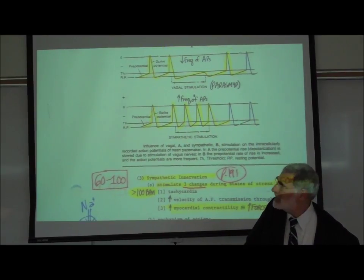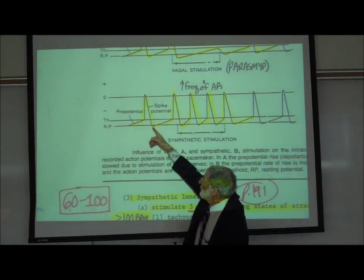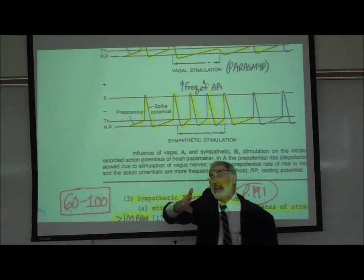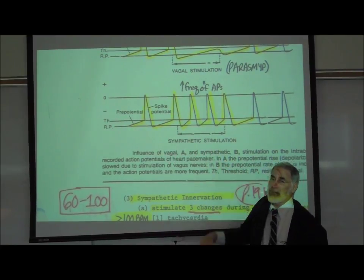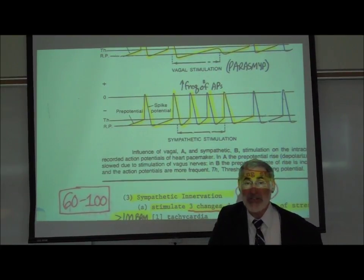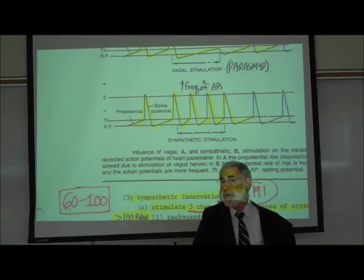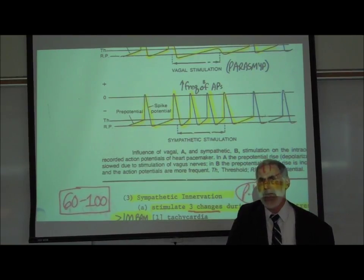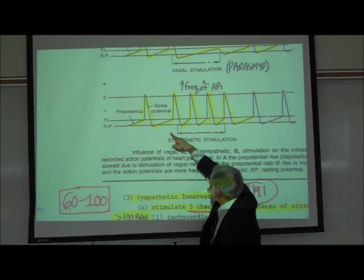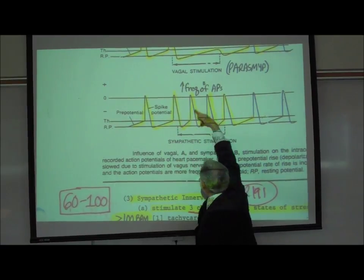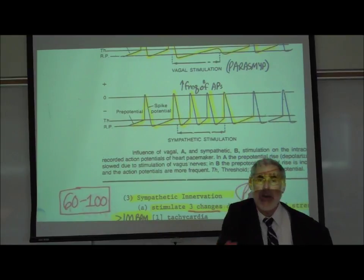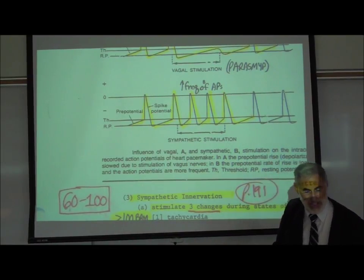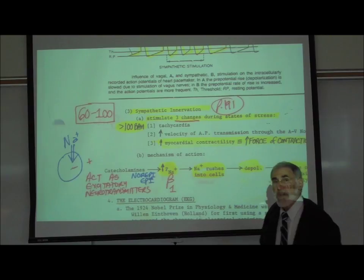We can see that on page 191. Here we see the pacemaker activity of the heart cells in the SA node. With sympathetic stimulation — activation of sympathetic autonomic motor neurons or administration of a sympathomimetic drug — that causes depolarization, which increases the frequency of action potentials, speeding up the heart rate.